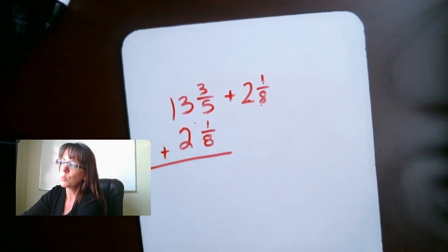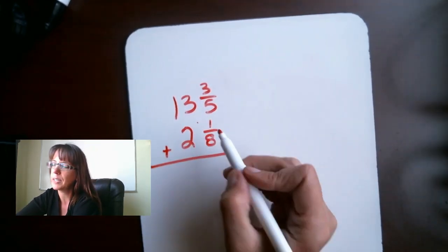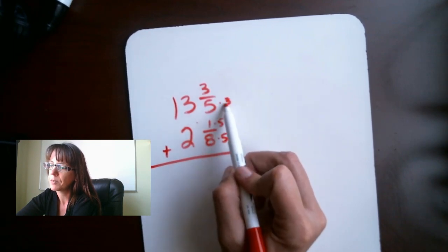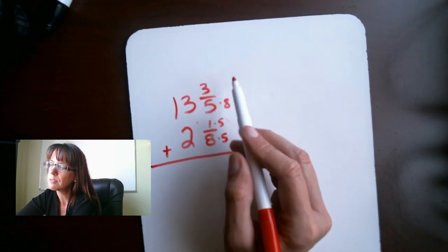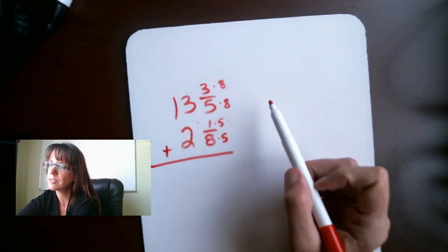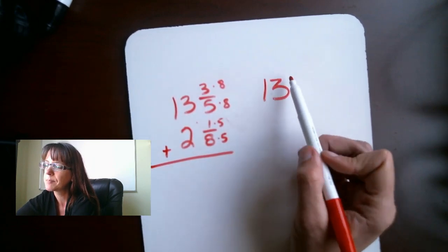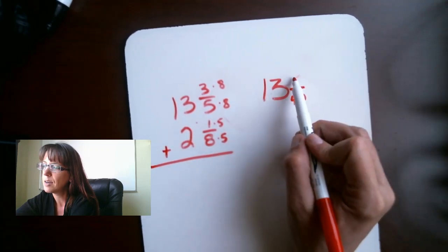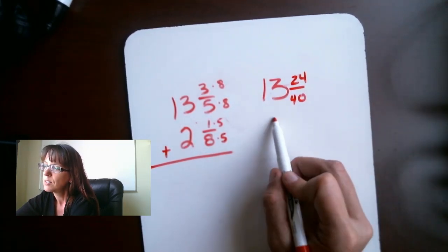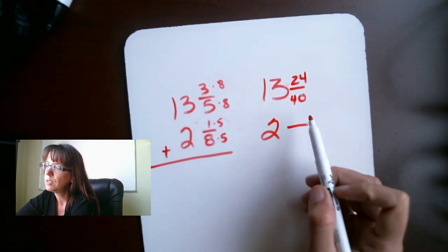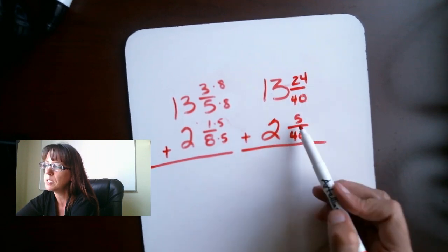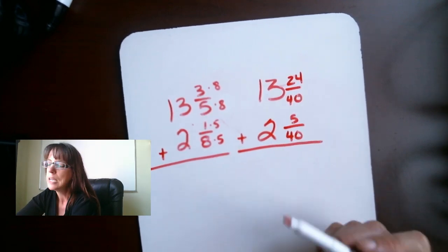All right. So, we still have to come up with that common denominator, all right? So, we're going to do 5, 5, 8 and 8. So, now what I have is 13 and over 40, 24, 2, 40, and 5. Hopefully, you guys are all with me so far. We have some common denominators here. Common denominators.